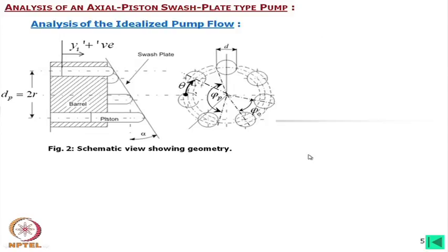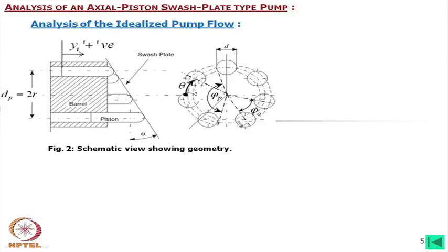If we consider the direction of rotation as clockwise, then one side is the compression phase and the other side is the suction phase. The manifold on the compression side is for discharge and the one on the suction side is the suction manifold.